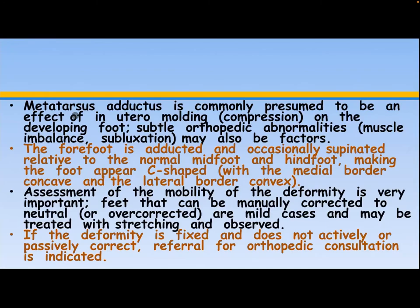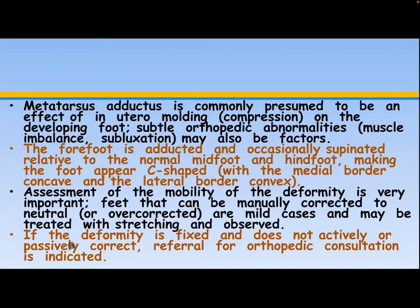Metatarsus adductus is commonly presumed to result from in utero molding and compression of the developing foot; subtle orthopedic abnormalities, muscle imbalance, and subluxation may also be factors. The forefoot is adducted and occasionally supinated relative to the normal mid-foot and hindfoot, making the foot appear C-shaped with the medial border concave and the lateral border convex. Assessment of the mobility of the deformity is very important — feet that can be manually corrected to neutral or over-corrected are mild cases and may be treated with stretching and observation.